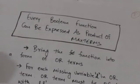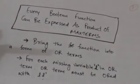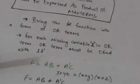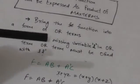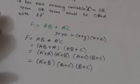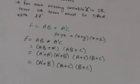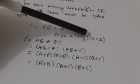Now every boolean function can also be expressed as a product of maxterms. First, we have to bring the function into a form of OR terms. For each missing variable L in an OR term, we must OR it with L and L complement. Suppose there is a function f equals ab + a'c and we have to express this function as a product of maxterms.